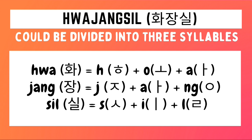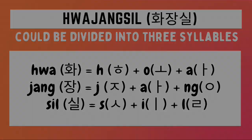For the second syllable, Jang, we need to draw a Hiyot character, followed by an A character, followed by an Iyong character. And for the last syllable, Shil, we need to draw a Hiyot character, followed by an I character, followed by a Rieul character. We then combine all of these to form the Hangul of Hwa Jang Shil.